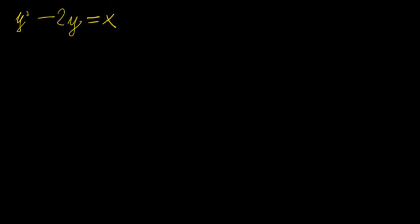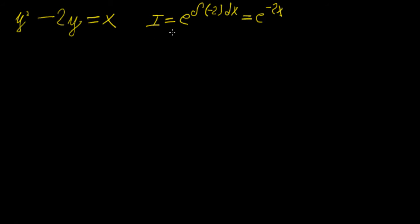You can immediately notice this is not a separable first order differential equation, so we resort to the method of the integrating factor. The integrating factor is e to the integral of a(x) — in this case the constant -2 — so e^(∫-2 dx) = e^(-2x). We ignore the constant of integration because it just cancels out.